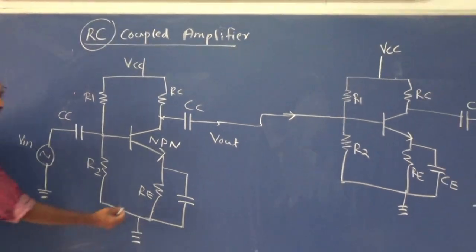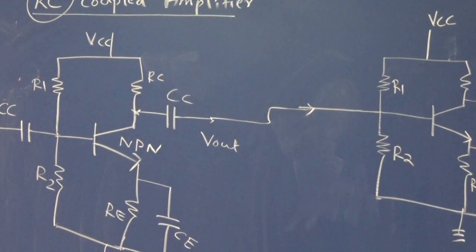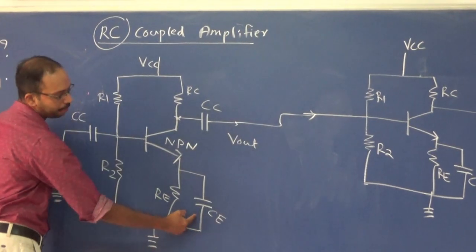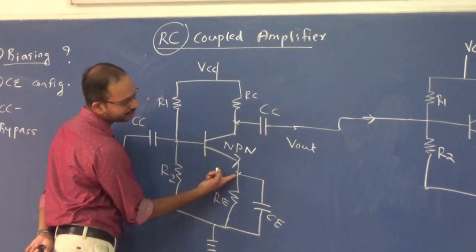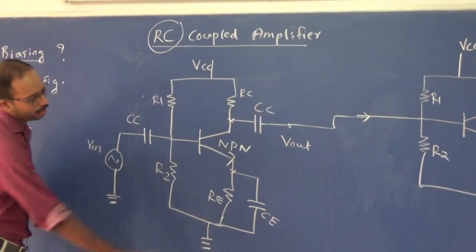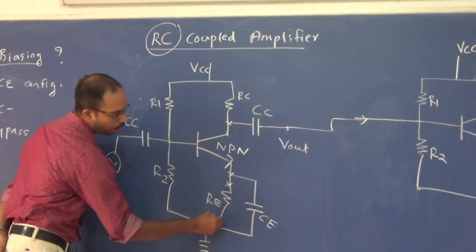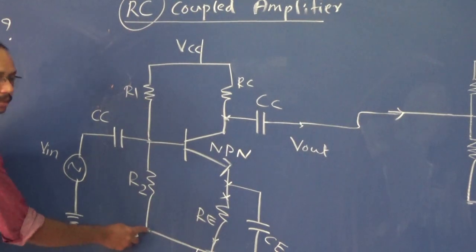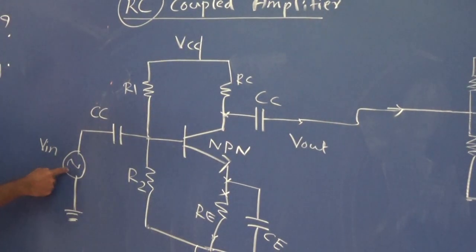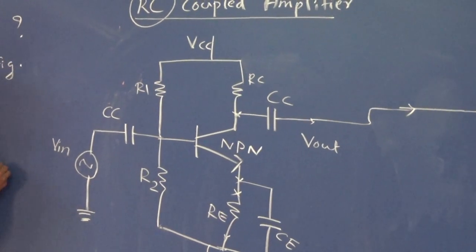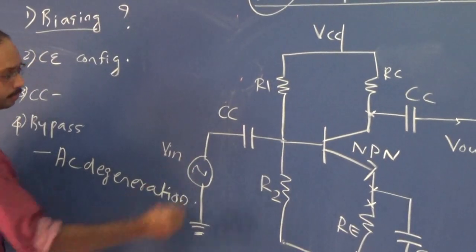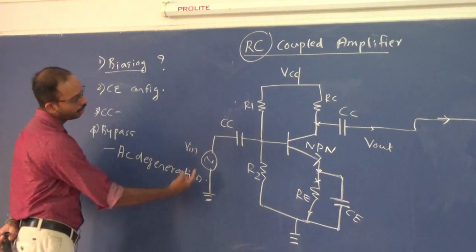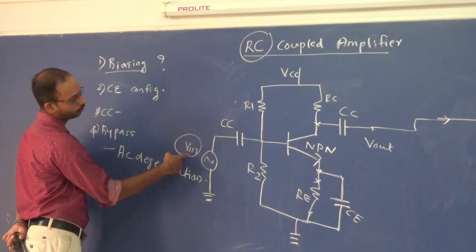There is another capacitor called the bypass capacitor. This bypass capacitor is used to bypass the amplified signal present at the emitter terminal. If this capacitor is not present, some voltage will be developed across the emitter resistor RE, and this voltage creates negative feedback that reduces the strength of the input signal, causing AC degeneration. The signal developed at the emitter is bypassed through this capacitor — that is the use of the bypass capacitor.